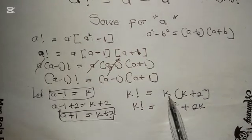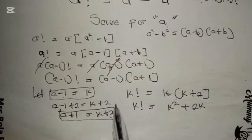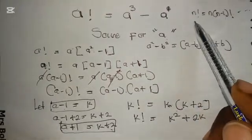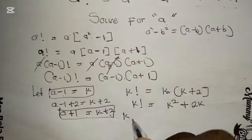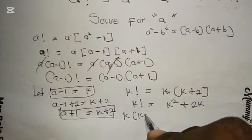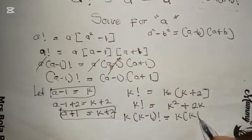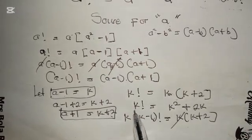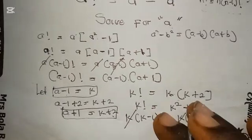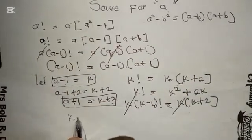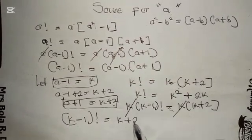We can simplify further. Since k factorial equals k times (k minus one) factorial, we substitute to get k times (k minus one) factorial equals k times (k plus two). Dividing both sides by k, we arrive at (k minus one) factorial equals k plus two.